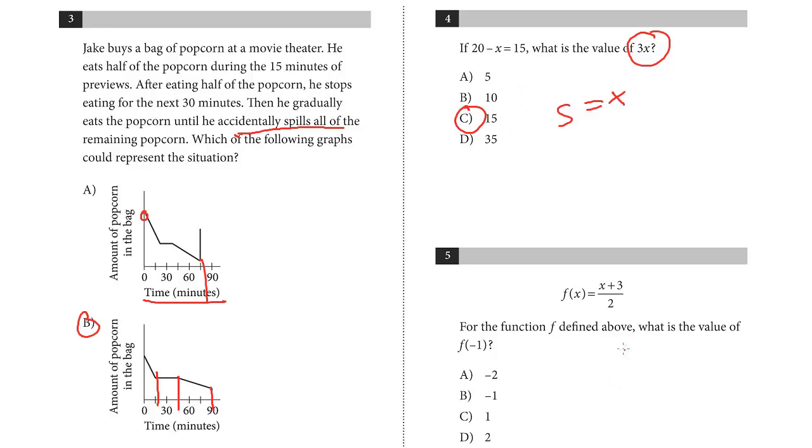And then let's do number 5. This is a function f(x) = (x+3)/2. For the function f defined above, what's the value of f(-1)? And so we simply have to substitute a negative 1 wherever we see an x. So here's an x, it's going to be -1 + 3 over 2, so that's going to be positive 2 over 2, and the answer is 1, C.